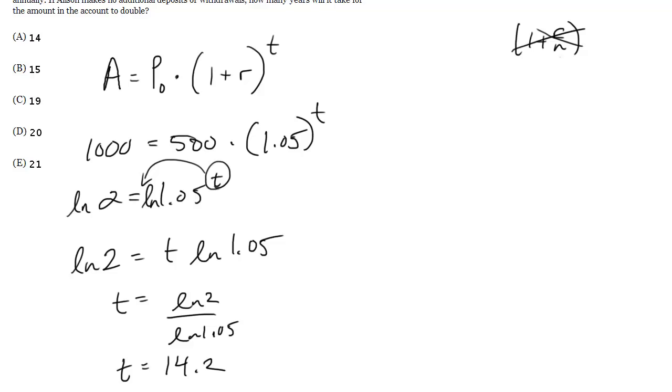Now be very careful here. Typically, we would be rounding down on a question where we got 14.2. If we were looking for a whole number, we would round down because it's 14.2. 2 is less than 5, so by the typical rounding rules, you'd round down.